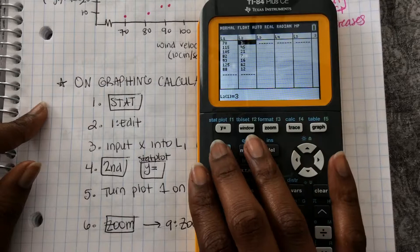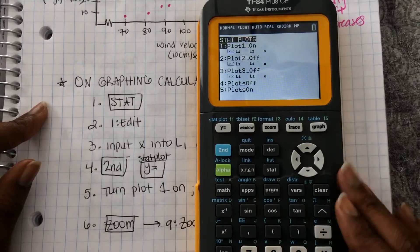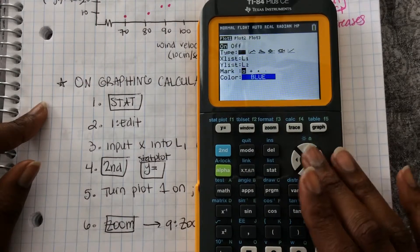Now I'm going to press 2nd, turn my STATPLOT on. It's on because it's highlighted.